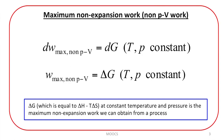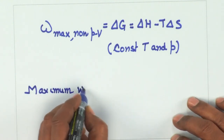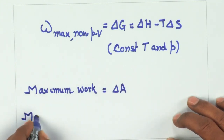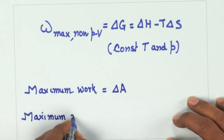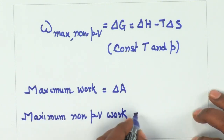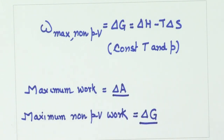ΔG = ΔH − TΔS at constant temperature and pressure is the maximum non-expansion work we can obtain from a process. The points to be remembered: if we are interested in knowing the maximum work, we need to know ΔA. If we are interested in knowing the maximum non-pressure-volume work, this is given by ΔG, at constant temperature and pressure. Let us not forget the constraints.